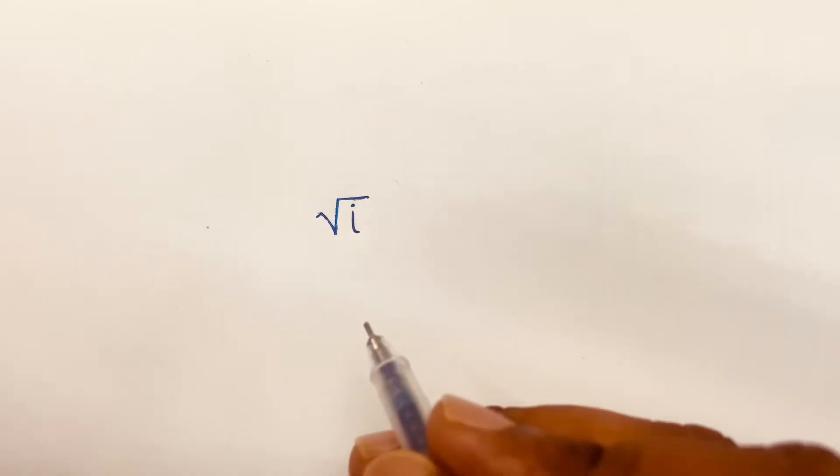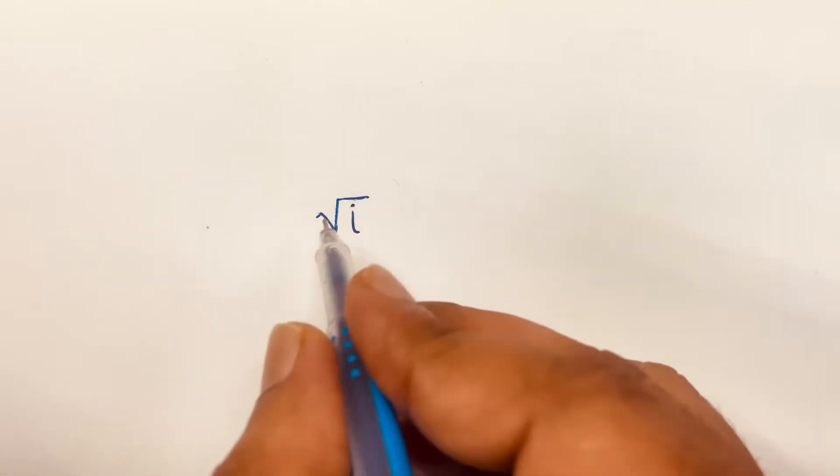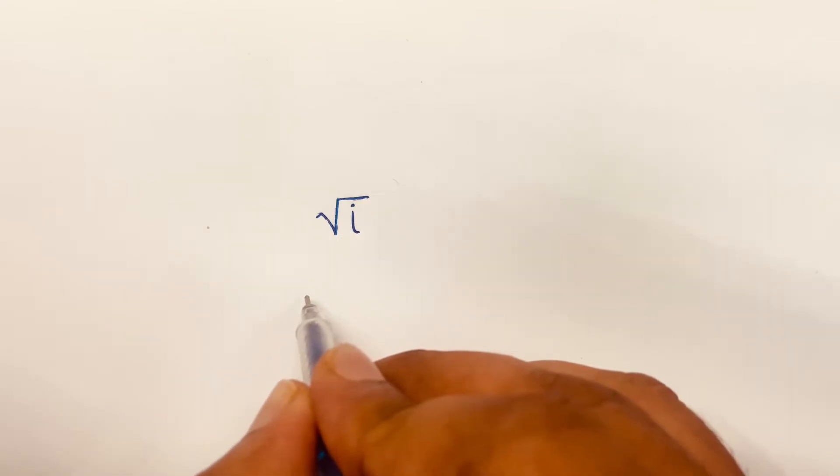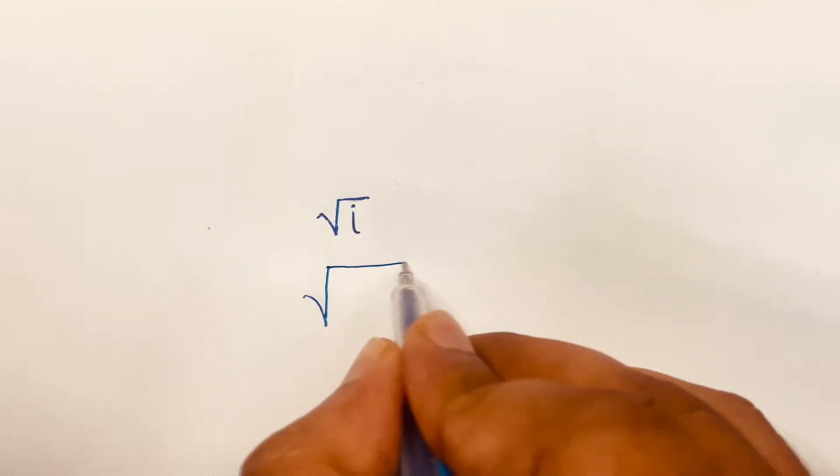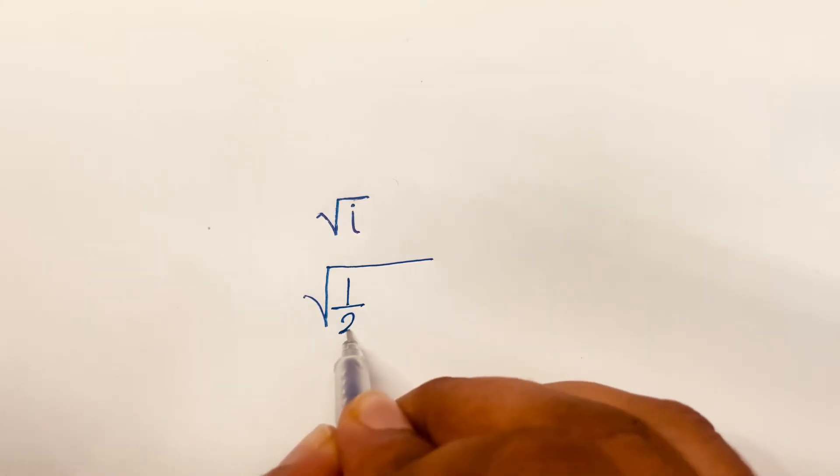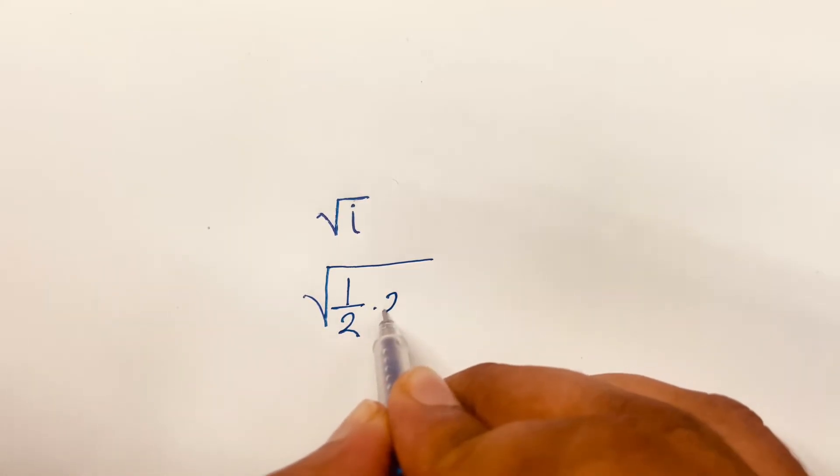How to solve square root i? If you want to solve this question, first of all, it will be square root half times 2i.